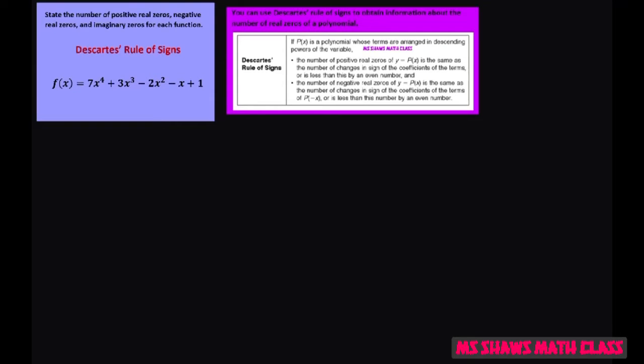So basically, Descartes' rule of signs is for the reals, real solutions. The imaginary zeros we're going to get from inference of what we get for the positive and negative.